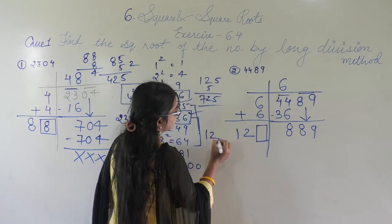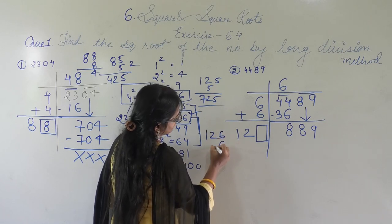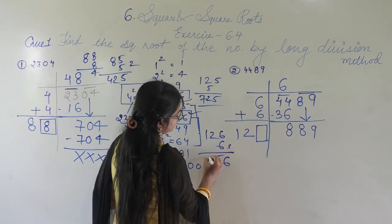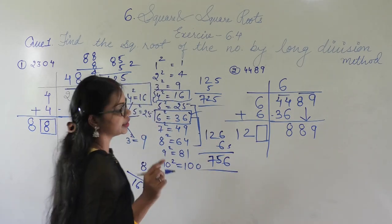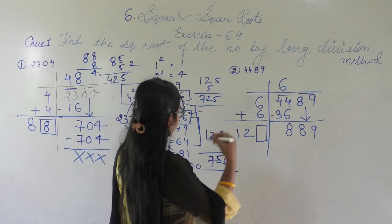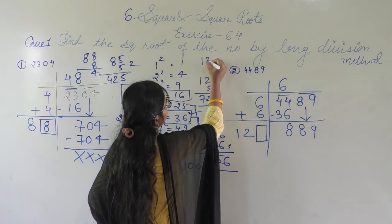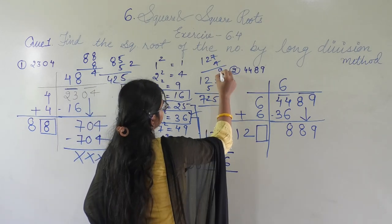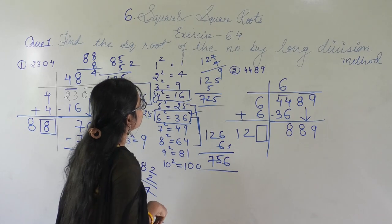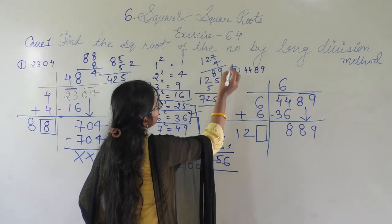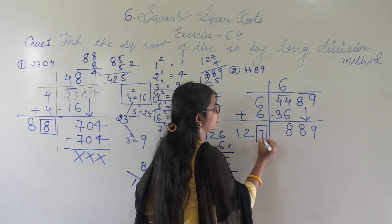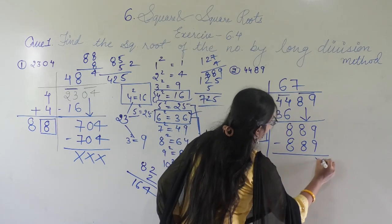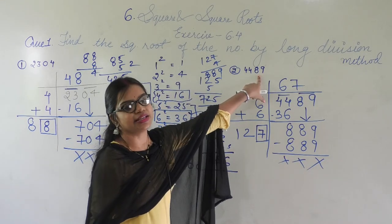Again, I need to find a digit to append to 12 such that the product equals 889 or less. Testing 127×7: 7×7=49, 7×2=14, giving 889. So 127×7=889. Subtracting gives remainder 0. Therefore, the square root of 4489 is 67.